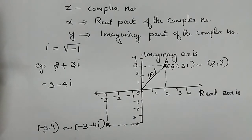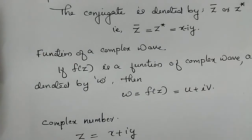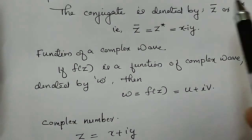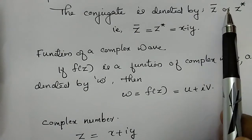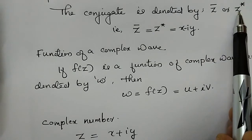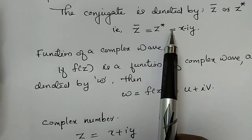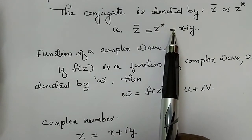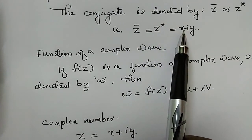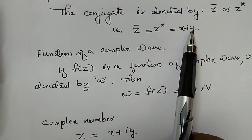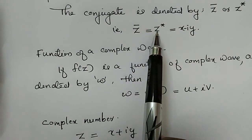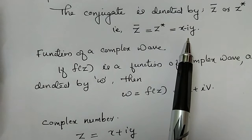Now we have to mark the conjugate. The conjugate is denoted by z bar or z star. We have to denote that as z bar equals z star equals x minus iy. The conjugate form of x plus iy is x minus iy.